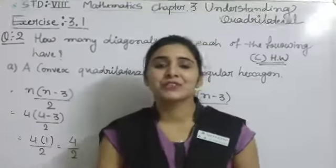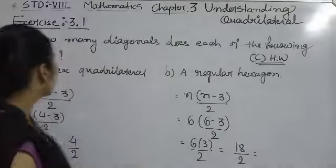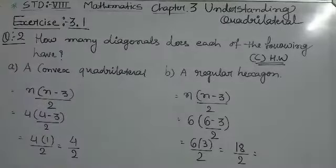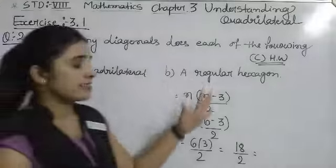Hello students, in this session we are going to do Exercise 3.1, question number 2. The question is: how many diagonals does each of the following have? The question asks about a convex quadrilateral and a regular hexagon.